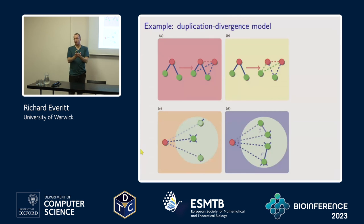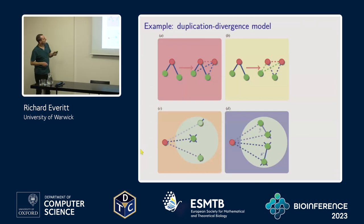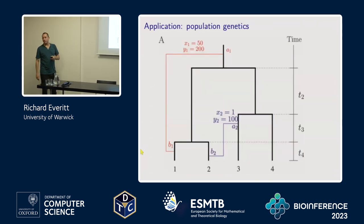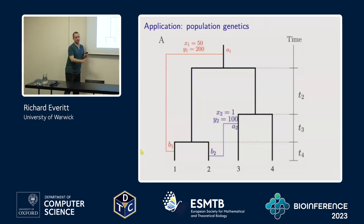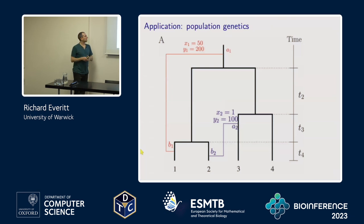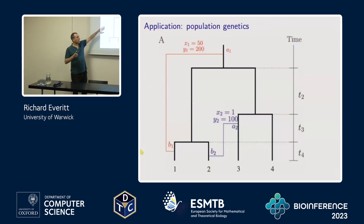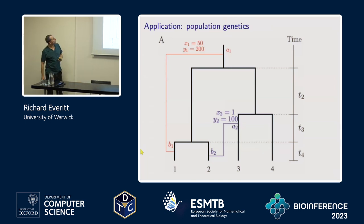Another model is a duplication-divergence model — a model for networks, specifically protein interaction networks. The model grows based on a starting point: you take an initial seed network, pick a node to duplicate, there's a chance you keep the same edges the current node had, and there's also a chance you link back to the node you copied from. You grow a network that way. Another one is in population genetics, where we observe DNA sequences and we're interested in selection or recombination rates, but there's also an ancestral tree that gave rise to the data, which is awkward.